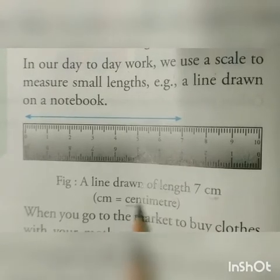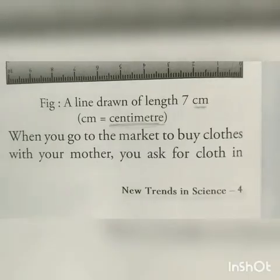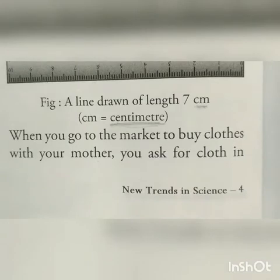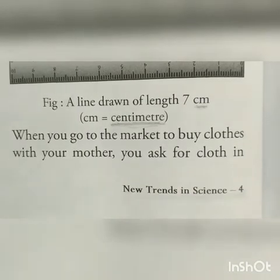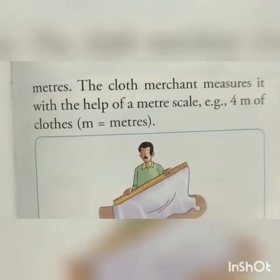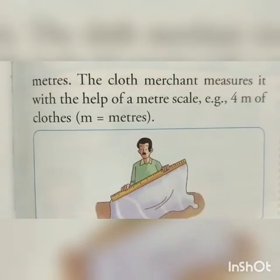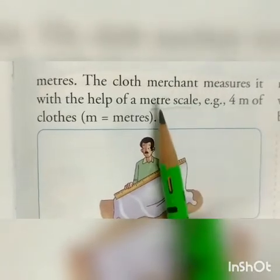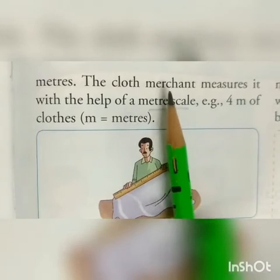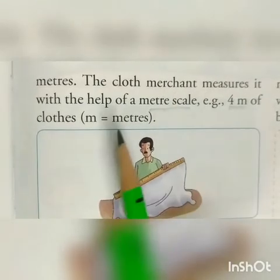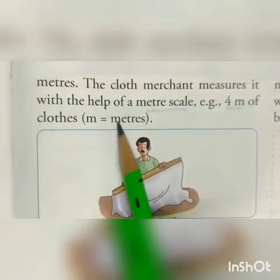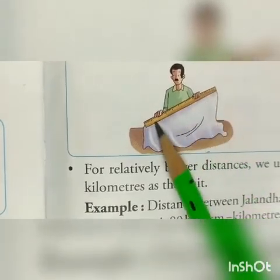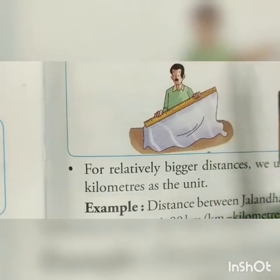When you go to the market to buy clothes with your mother, you ask for clothes in meters. You ask in meters because the cloth merchant measures the cloth with the help of a meter scale. For example, 4 m of cloth — here m stands for meter. With the help of the meter scale, the cloth merchant cuts the cloth by measuring how much quantity you need.